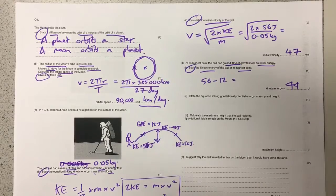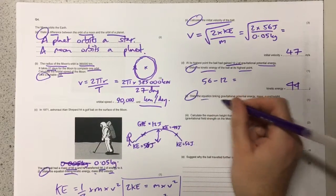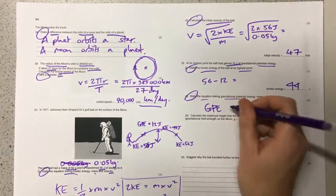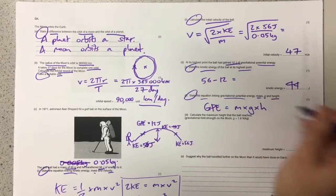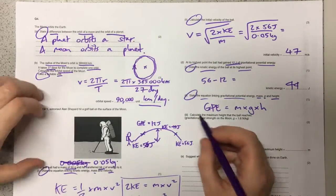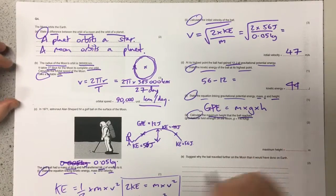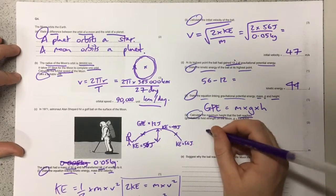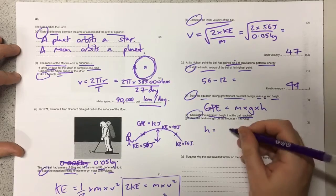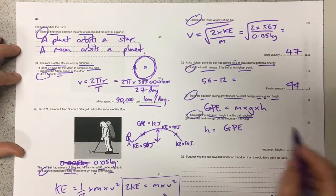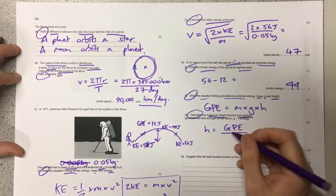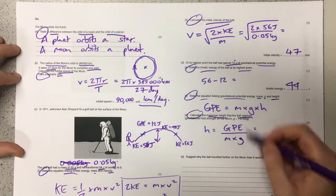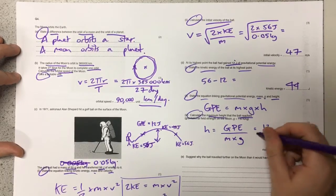The next part of the question asks us to state the equation linking GPE, mass, acceleration due to gravity, and height, and that is GPE equals m times g times h. Then it asks us to calculate the maximum height that the ball would reach, so we're going to have to use this here. Again, we're going to have to rearrange the equation. This one's a little bit easier to rearrange because the height is the GPE and then we're just going to divide by the mass times the acceleration due to gravity.